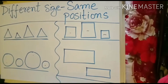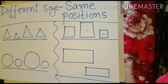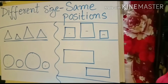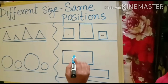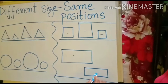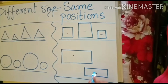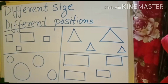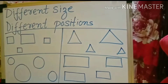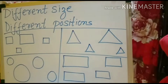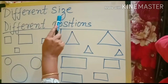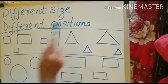Now let us have a look at the rectangle. They have the same position but different size — this is a big rectangle and this is a small rectangle. Children, earlier we learnt about different sizes and same positions. But now we are going to learn about different size and different positions.